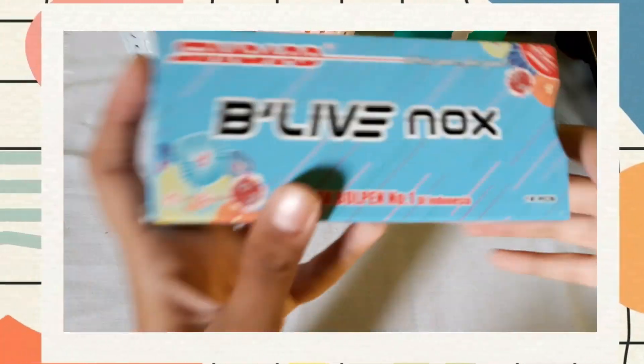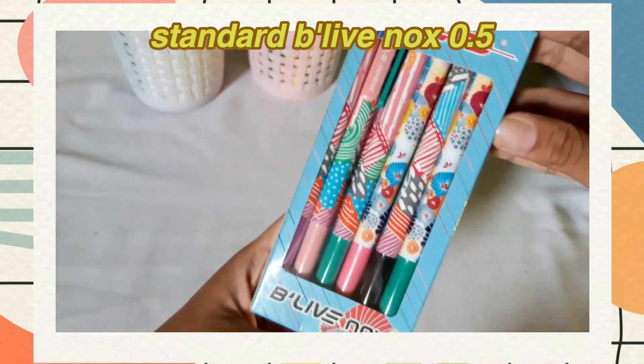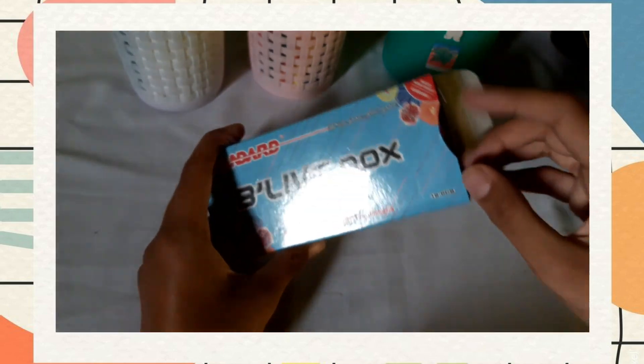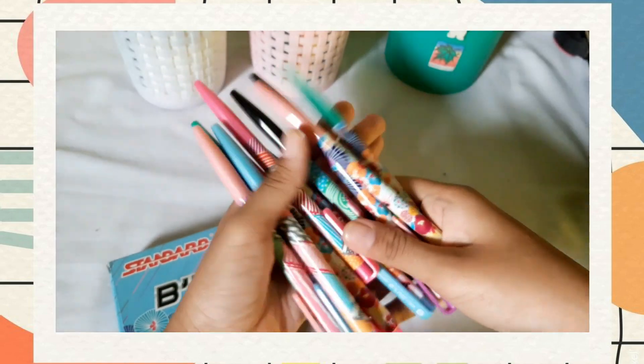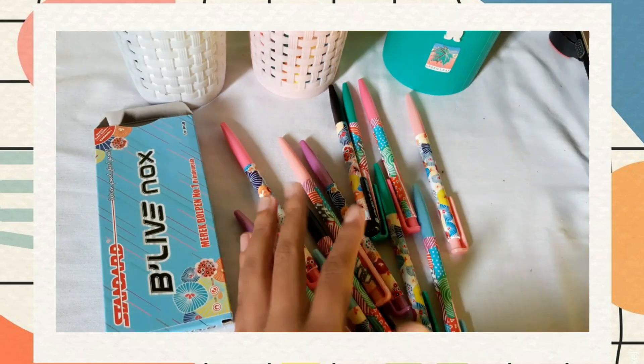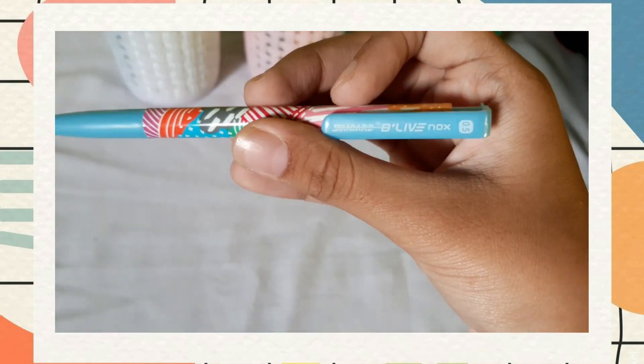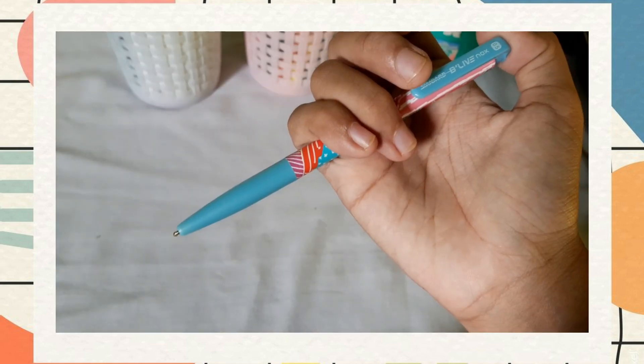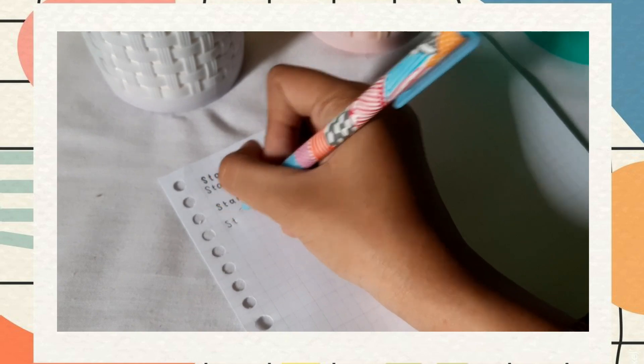Next, ada Standard B-Live Nox 0.5. Jumlahnya tuh masih sama kayak yang sebelumnya. Terus packagingnya juga sama, transparan gitu, dan body pennya juga ada motifnya yang pastinya lucu banget. Oh iya, pulpen ini tuh bukan pulpen gel ya. Jadi B-Live Nox ini adalah pulpen dengan tipe retractable alias pulpen cetek-cetek gitu.